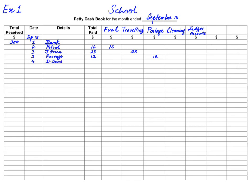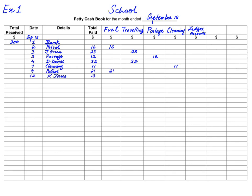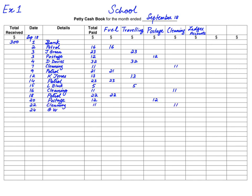On the 4th, D Davis's traveling expense is recorded in the traveling column, as these are employee travel payments. There is also a cleaning expense written in both the total paid and cleaning columns. Every item is written in total paid and simultaneously in one of the analysis columns. Then we have petrol again, K Jones's traveling expense, more petrol, and further postage and cleaning entries — these follow the same pattern and are entered in their respective analysis columns.